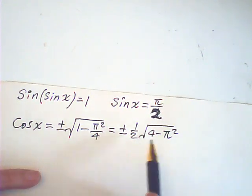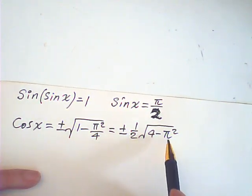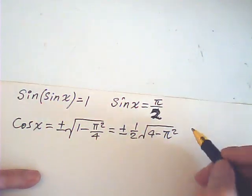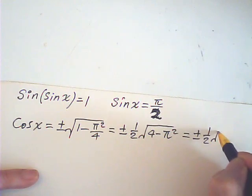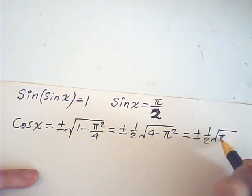Now, since 4 is less than pi squared, therefore this is an imaginary number, so equal to plus or minus one half square root pi squared minus 4i.